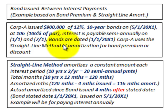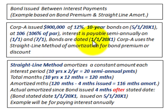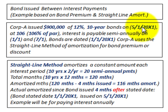Corporation A uses the straight-line method for amortizing any bond premium or discounts. The key point is the bonds are dated 1-1-20X1, but they're only issued four months later on 5-1-20X1. That's what we mean by issuing bonds between interest payments, and we have to determine how the interest is calculated.